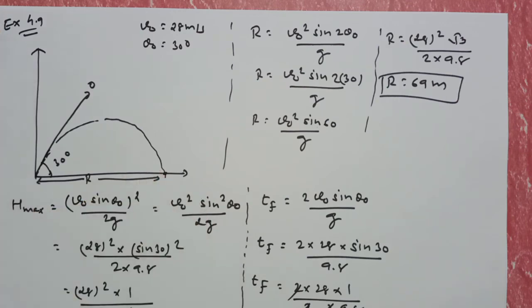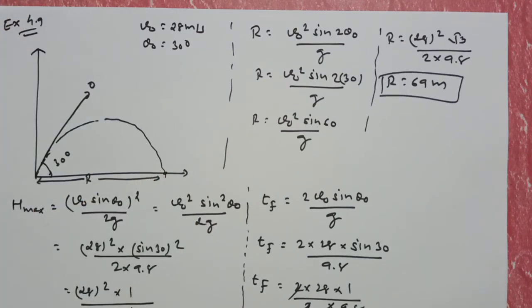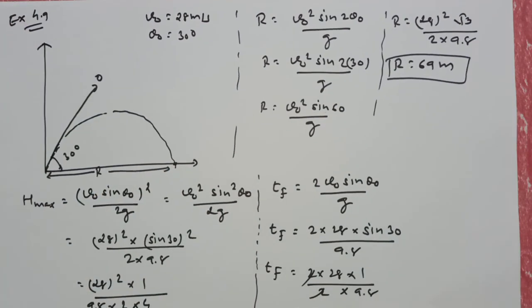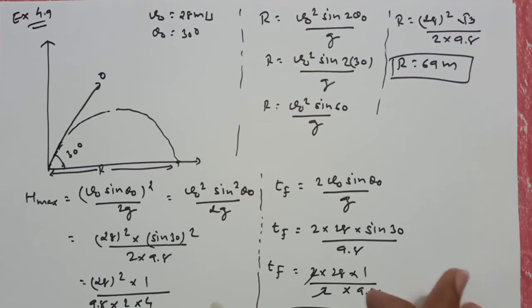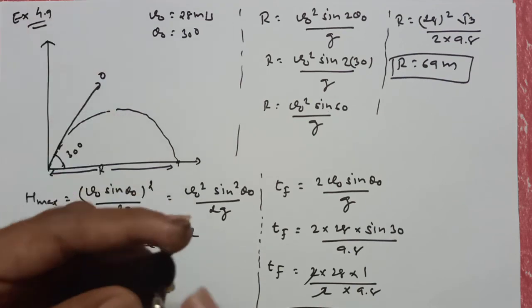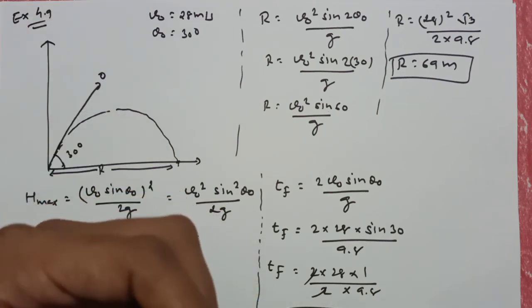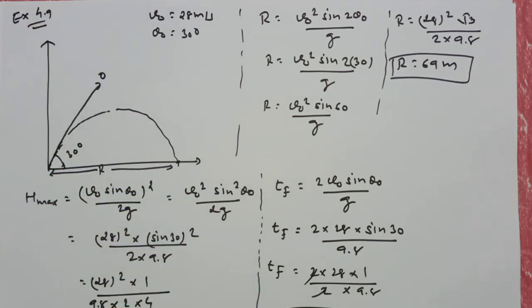69 meters दूर जाके वो गिरेगा। तो यहाँ पर हमारा example 4.9 complete हो रहा है।